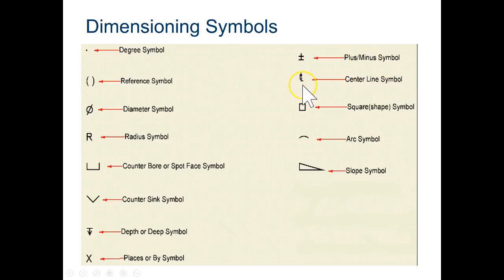This is a C with an L through it. This is something we'll use to specify a center line. In our dimensioning practices, we're normally just going to know what a center line looks like. This helps us define an arc and this is specifically for a slope. We probably won't use slope much at all.